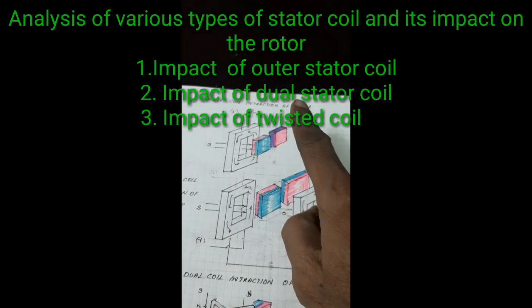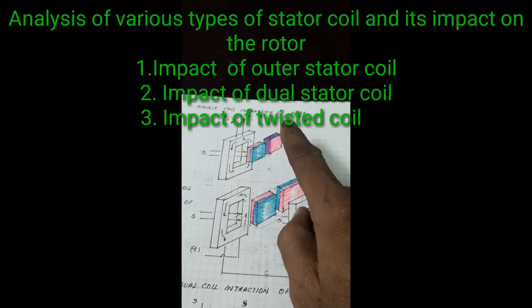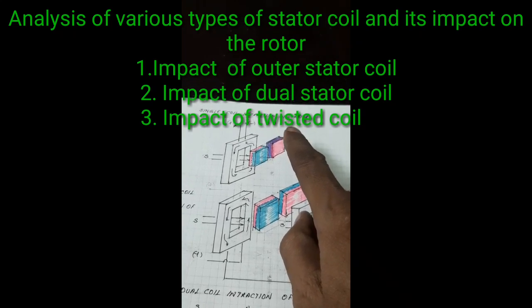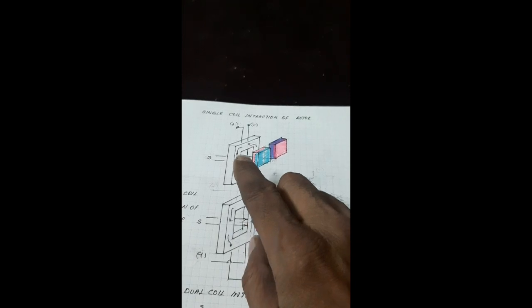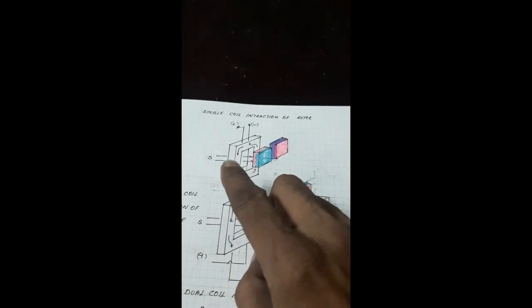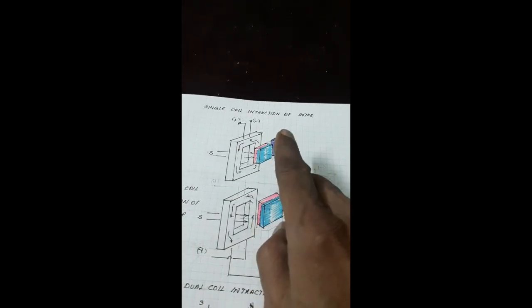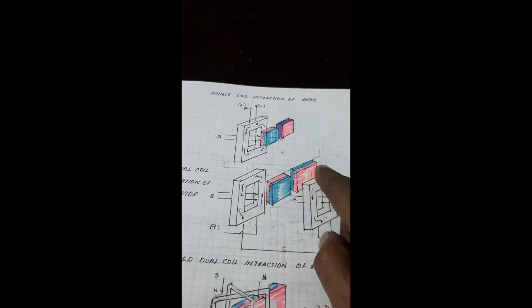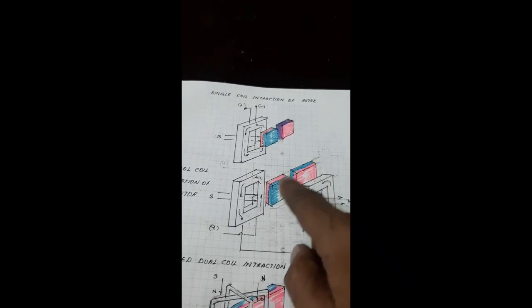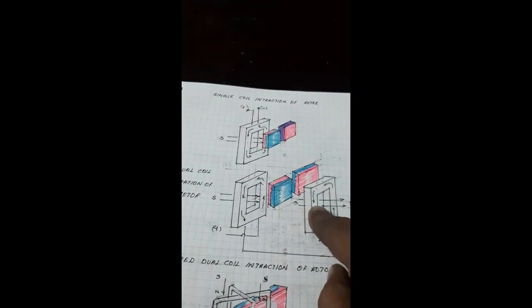Look at this. The first figure shows the interaction of the single coil. The force acting on the rotor is in one direction. The second figure shows that the rotor passes between the two stator coils — inner stator and outer stator.